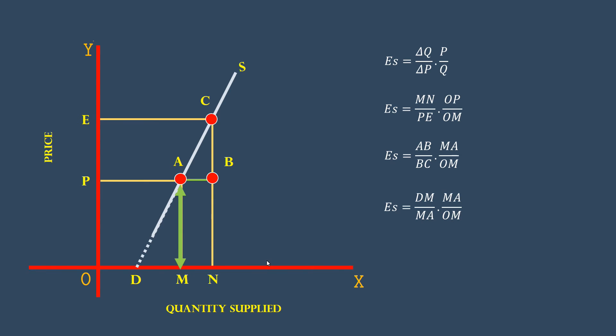MA and MA get cancelled. Finally, we get DM over OM. This is the geometric method formula.